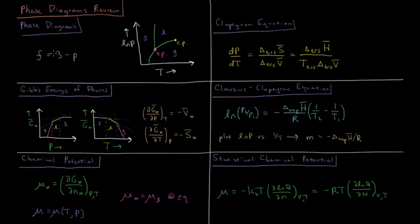The number of degrees of freedom — the number of thermodynamic variables you can change without changing which phase you're in — is equal to three minus the number of phases that coexist at that point. So you have two degrees of freedom within a given phase, one on a coexistence curve, and zero at a triple point or critical point.